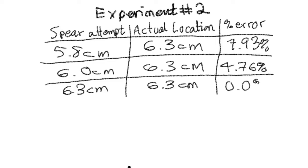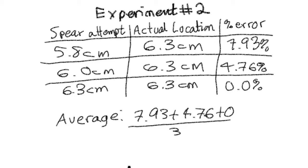We repeated this two more times, and I was actually able to hit it on the third attempt. So here I'm just writing down in this table three things: my spear attempts, the actual location, and the percent error just like I calculated in the last one. For my second attempt, I was only able to get it to about 6.0 centimeters, but as you can see in my last attempt, I was actually able to hit the fish. If we were to take all of the percent errors I had for those three trials, add them together, and divide by the number of trials, which was three, it would show that on average I was off the mark by 4.23%.